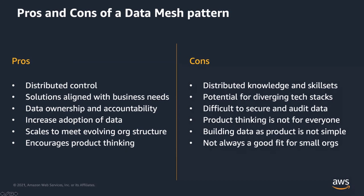The second con is the potential for a diverging tech stack — similar to what happened with microservices architecture. Each data domain will want to create their own tech stack that they feel is the fastest, cheapest, and best. From an organizational perspective, that means different skill sets required, difficulty moving people around, harder to share lessons learned, and potential cost differences between platforms that the organization has to account for. It also becomes more difficult to secure and audit data consistently when you have distributed, different tech stacks.